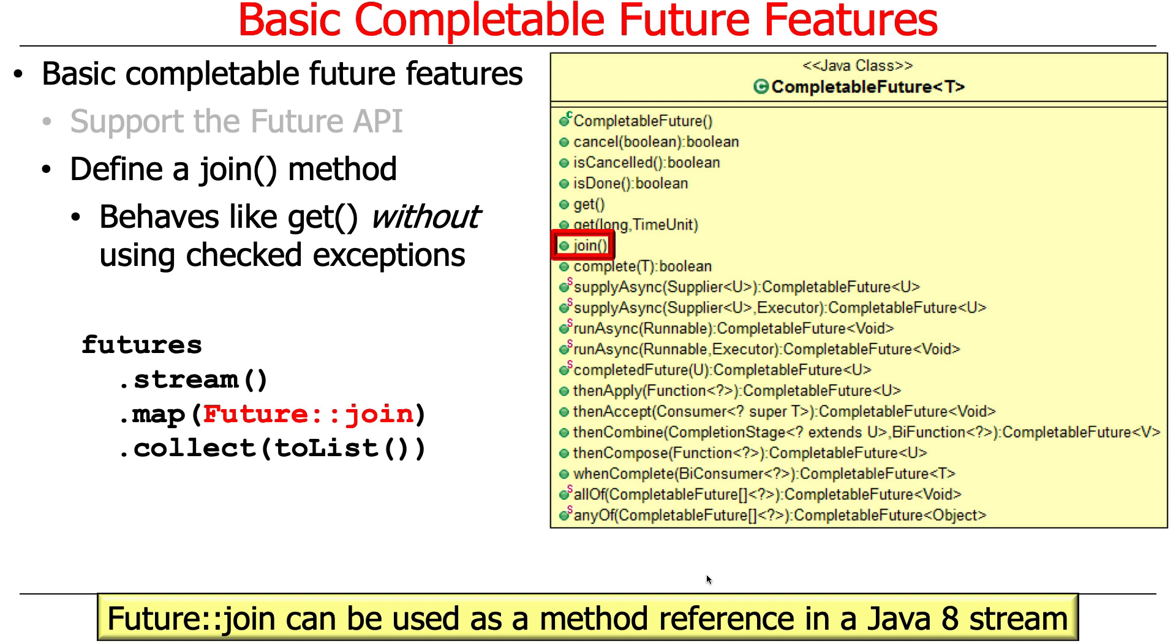For example, this particular little code snippet takes a list of futures, turns it into a stream, joins all the futures using the map call with future::join, and then it takes the results of all the join futures and collects those results into a list. So that's nice and concise and easy to understand. And you can see it's a method reference.